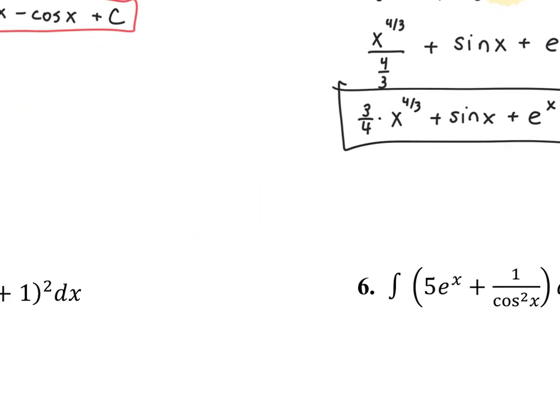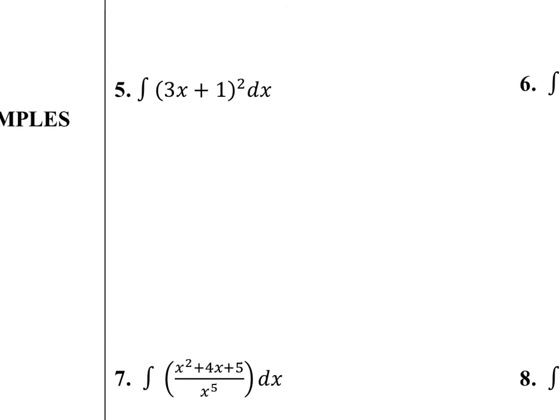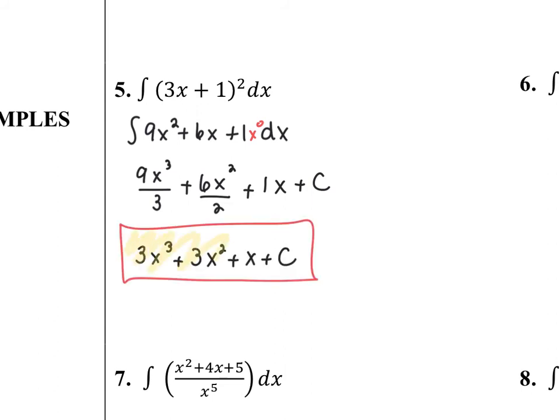For question 5, we'll learn a different method later, but for now we expand the binomial — it's only to the second power, so it's easy. Once expanded, it's just a trinomial, and I apply the power rule term by term: add 1 to the power, divide by the new power on each one. The constant 1 is the derivative of x — think of it as x to the 0; add 1 to get 1, divide by 1. After simplifying the coefficients, that gives the final antiderivative.